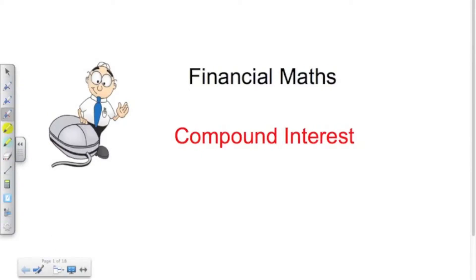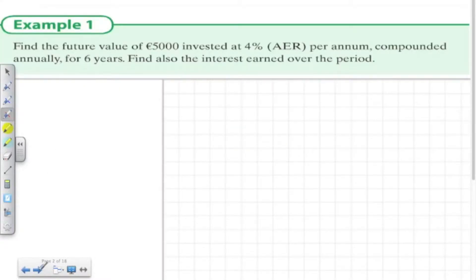Financial maths, compound interest. In this first question we're working out the future value of five thousand at four percent annual equivalent rate for six years. We also want to find out the interest over this period.